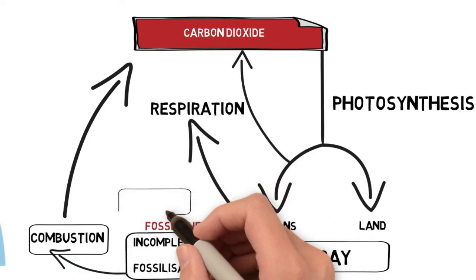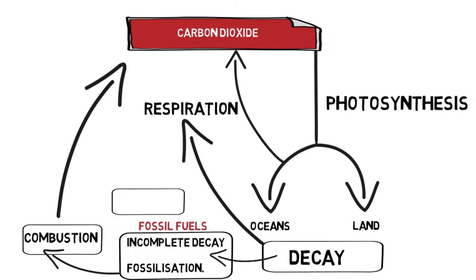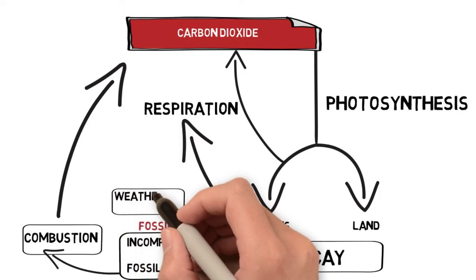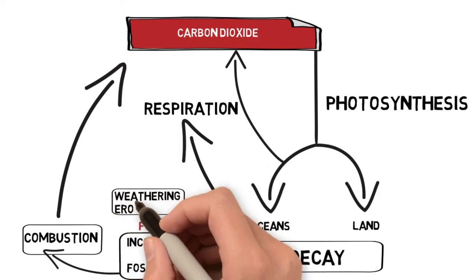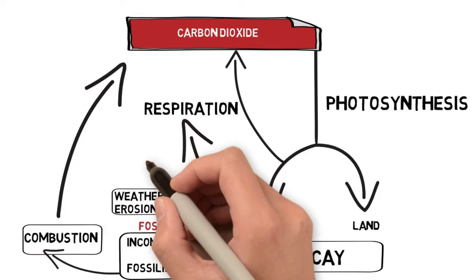A lot of carbon is trapped in rocks. And when this rock is weathered or erosion occurs, a lot of CO2 will eventually make its way back to the atmosphere in this way.